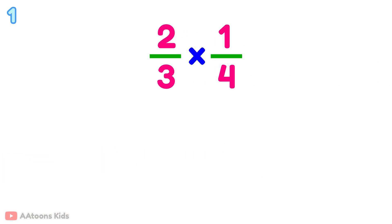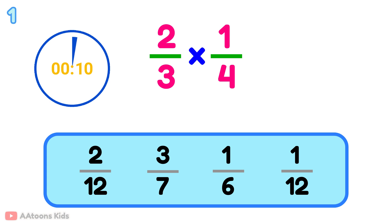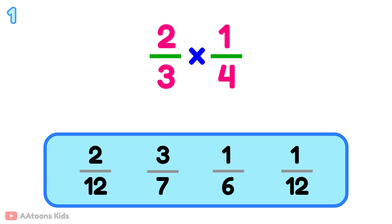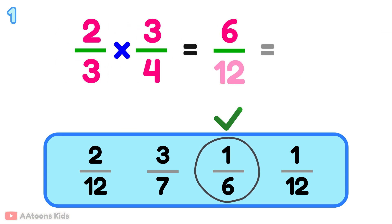What is 2 over 3 multiplied by 1 over 4? 1 over 6.